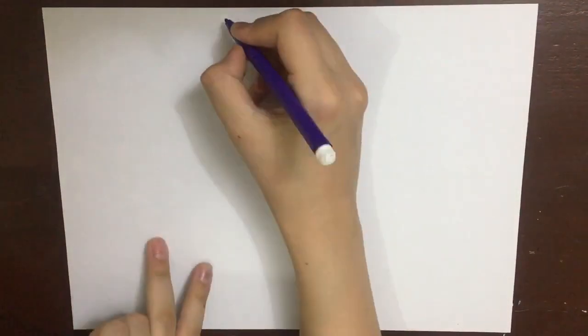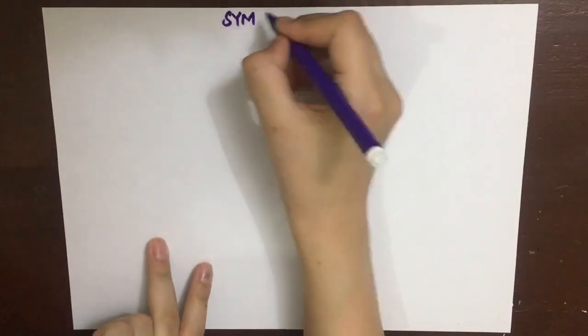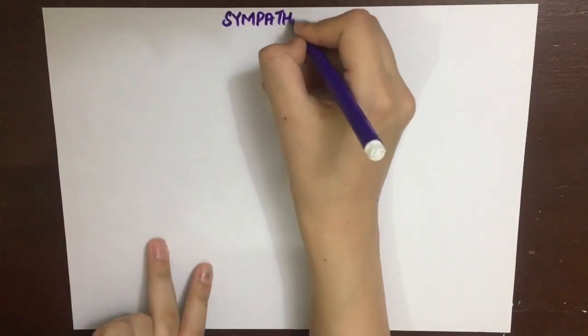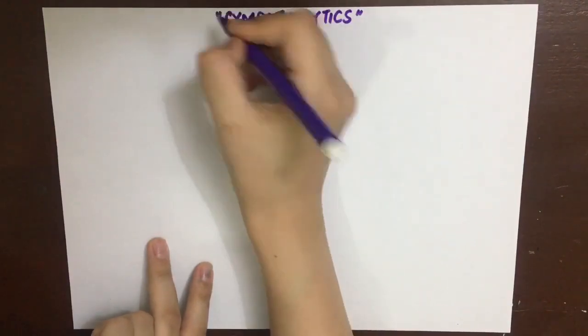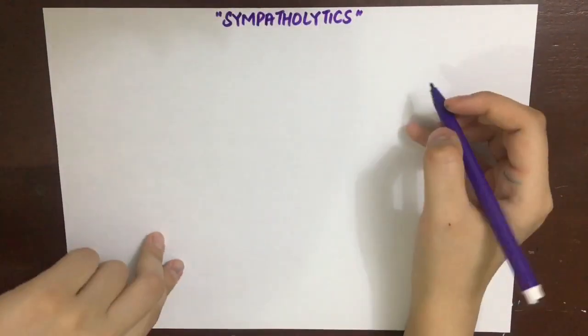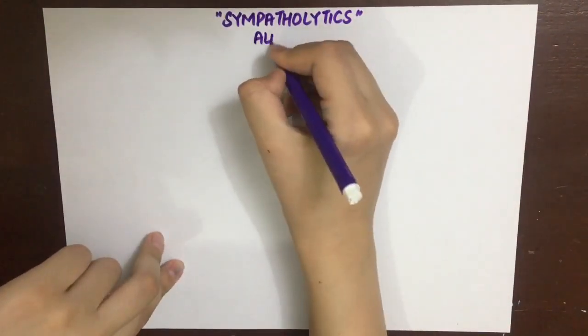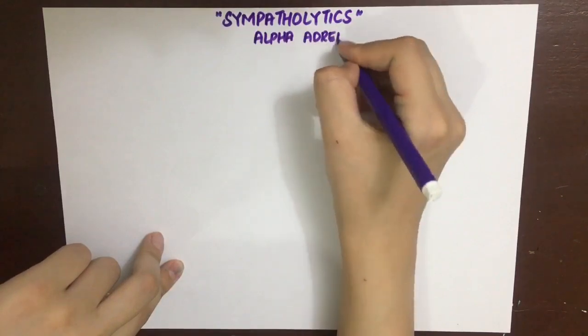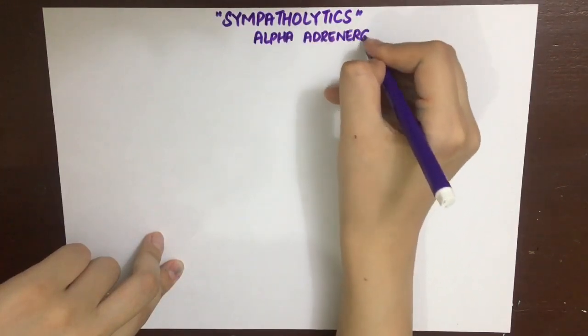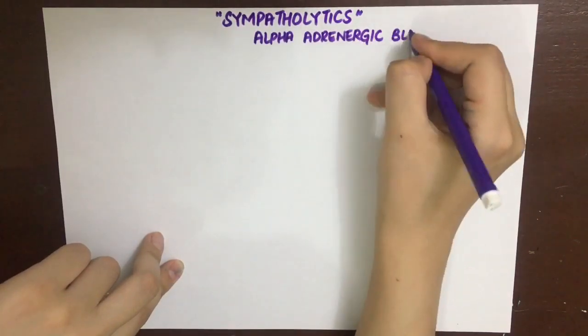Now we'll discuss sympatholytics, also known as adrenergic blockers. We'll discuss them separately for both alpha and beta receptors. Firstly, we'll see the alpha adrenergic blockers.